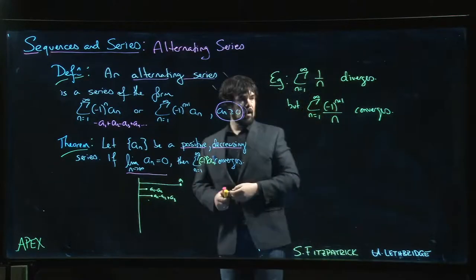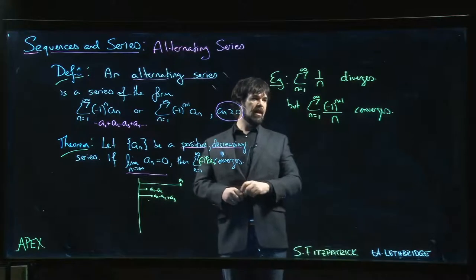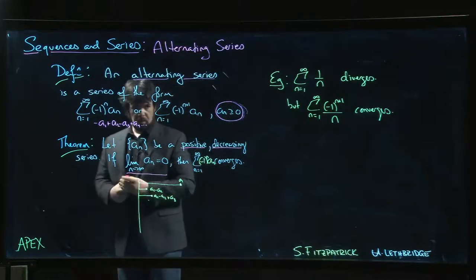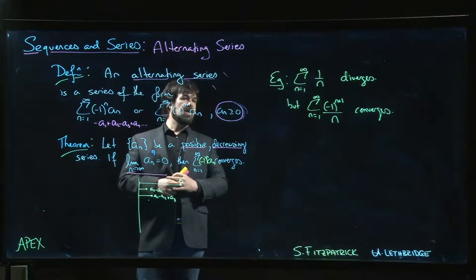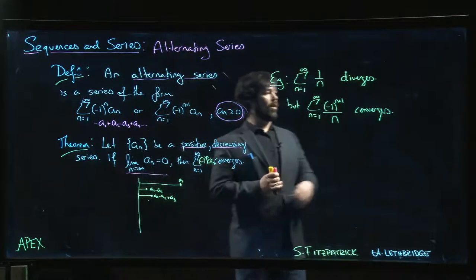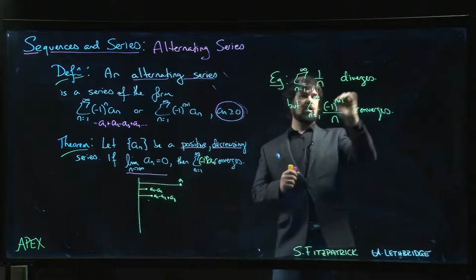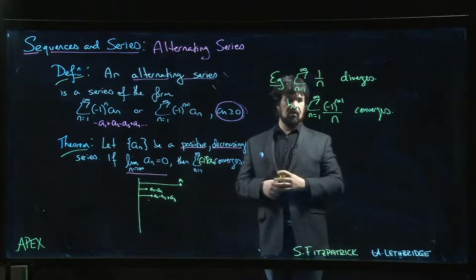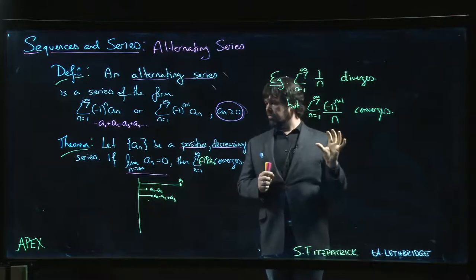The other thing that we don't have time to talk about is an interesting thing, but it's beyond the scope of a calculus course. It turns out that in cases where the alternating series converges but the non-alternating series doesn't, this is referred to as conditional convergence.